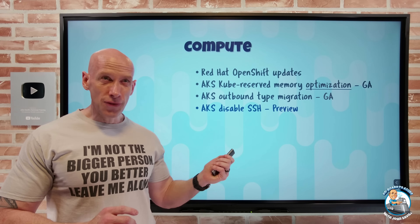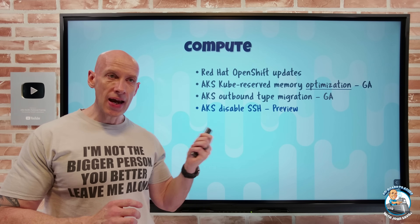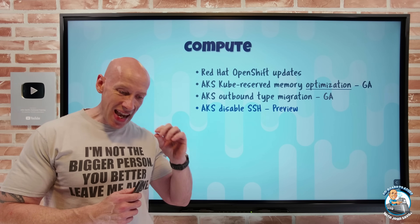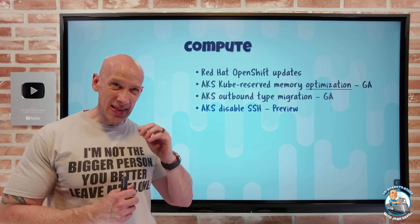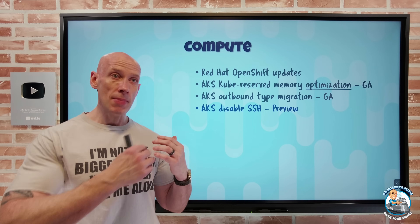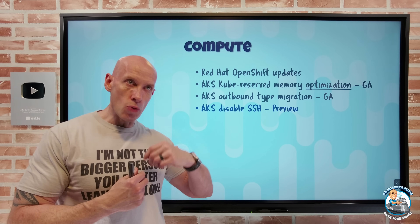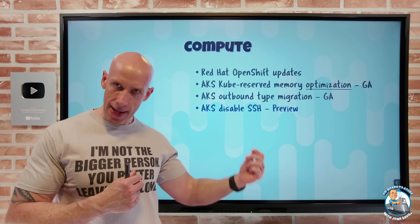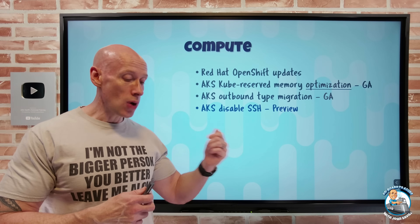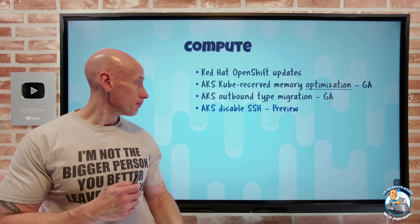By default, SSH is enabled for AKS. I can now disable that if I consider it insecure - maybe it's a path to do bad things on my AKS cluster. Now in preview, I can disable the secure shell.